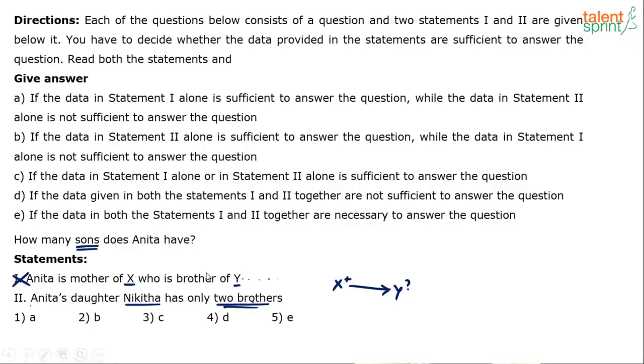Which means Anita has only two sons. What do we have to find out? How many sons does Anita have? Two sons. How am I able to say this? Just by reading statement number 2. Anita's daughter Nikita has only two brothers, which means Anita has got only two sons.